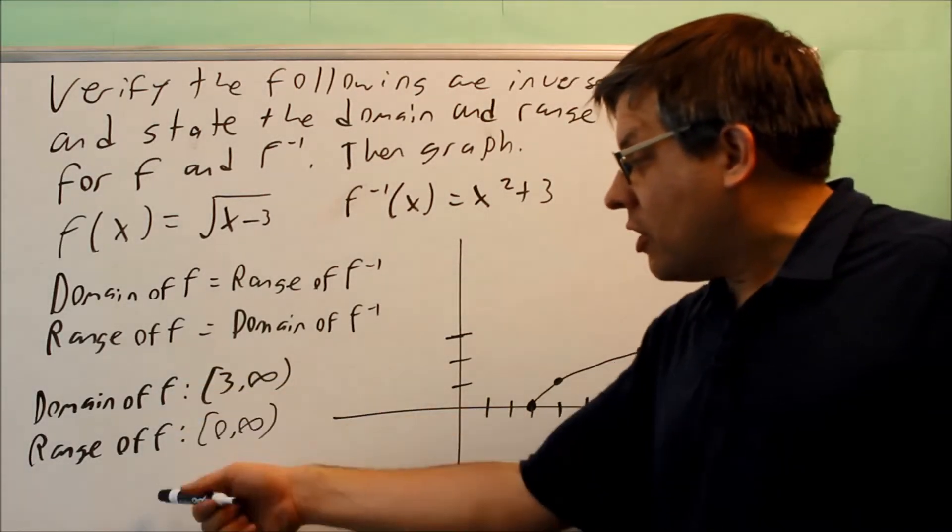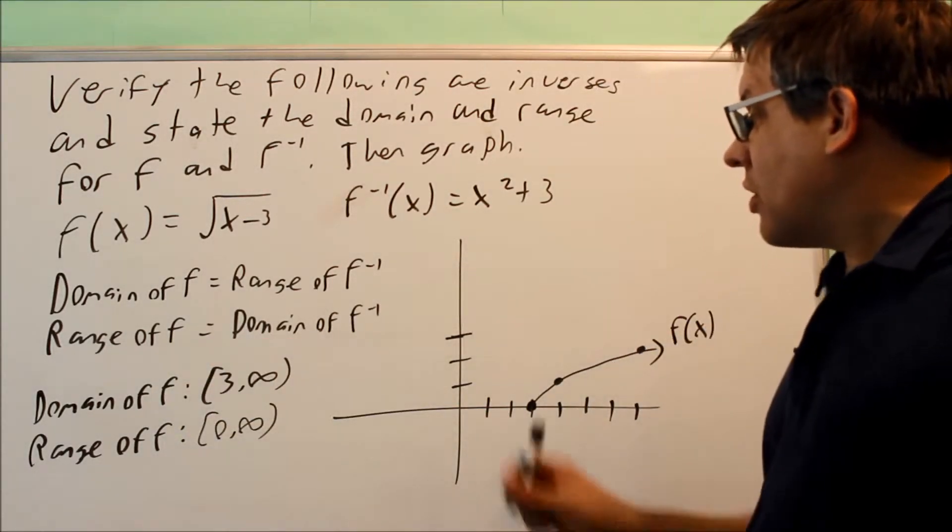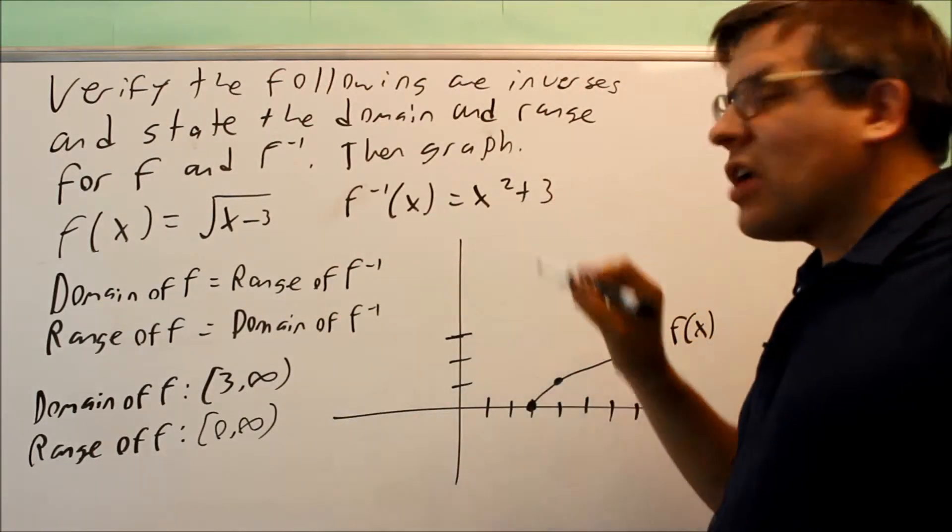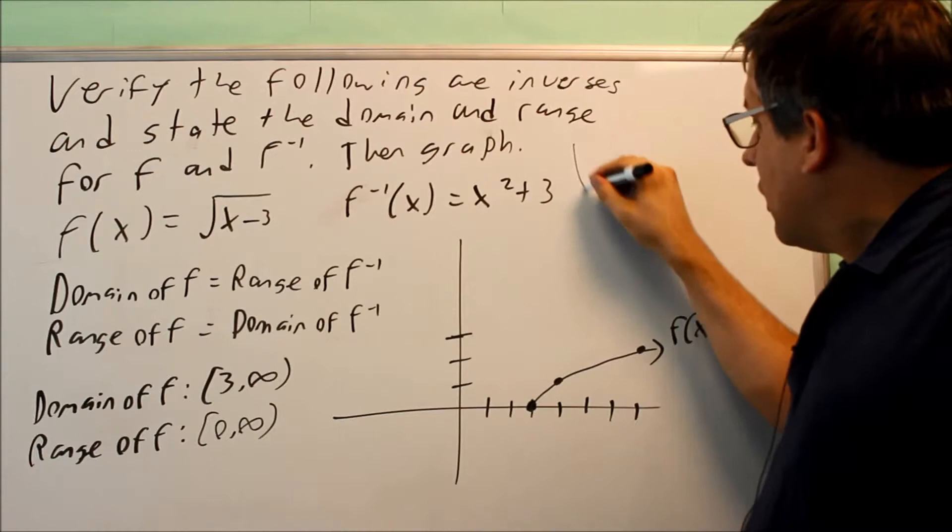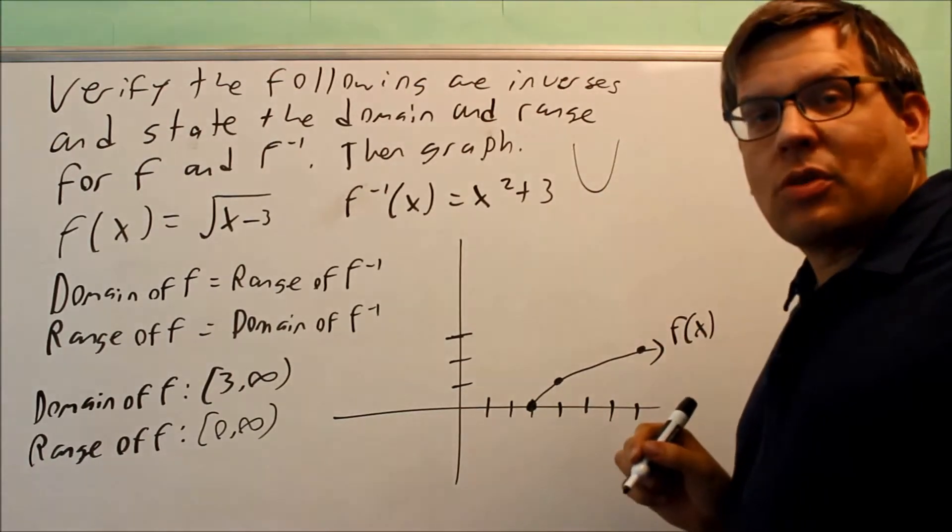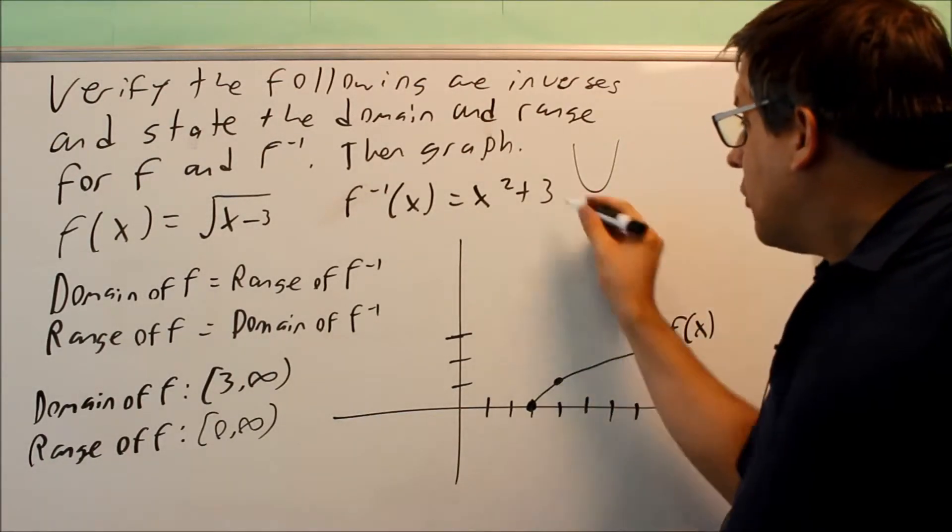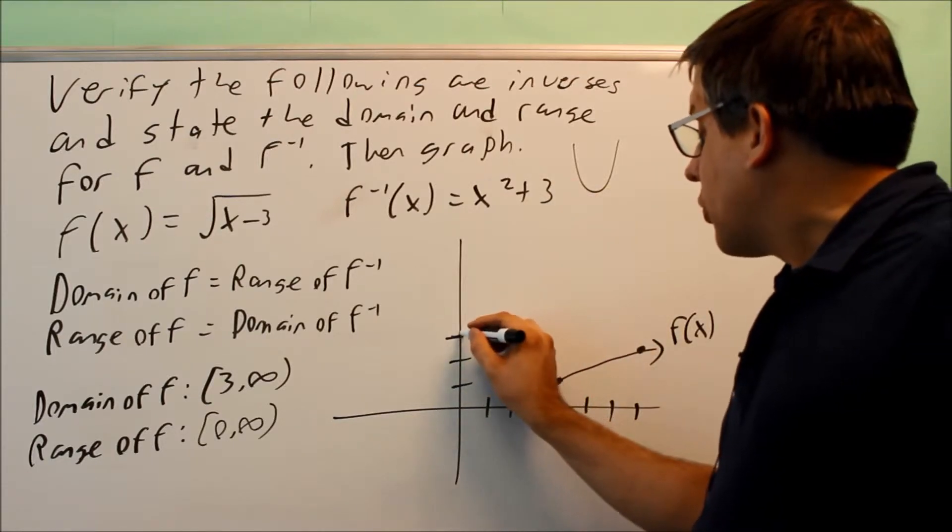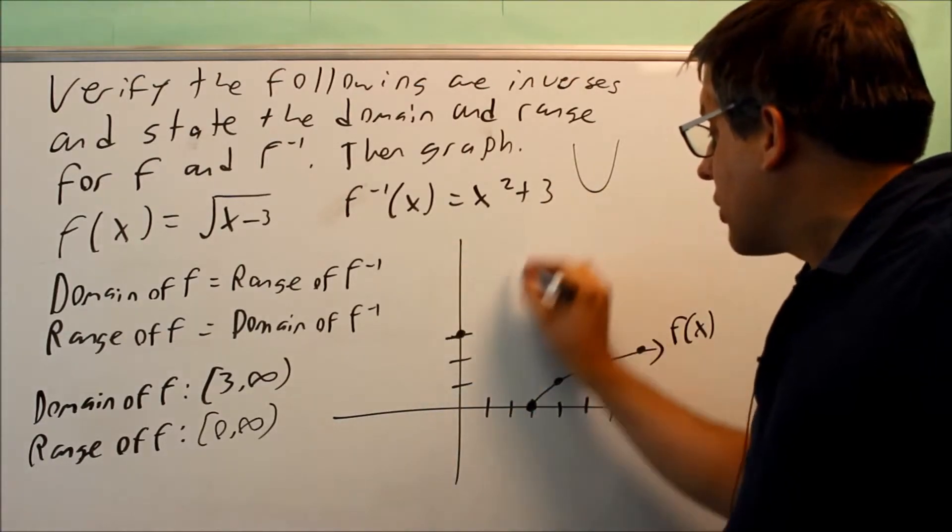So now that I have domain and range of each of these, now that's going to tell me how I'm going to draw my inverse. Now the inverse, since it's x squared plus 3, normally this would look like that. That would be some kind of a parabola. And it would be shifted up 3 units. And so it would go through here and it would look something like that.